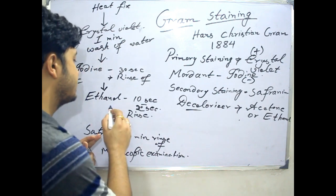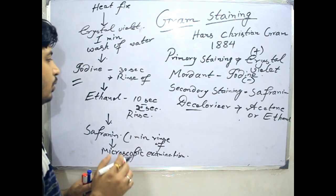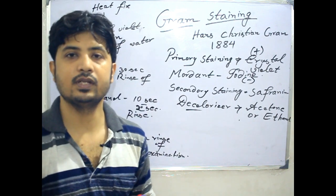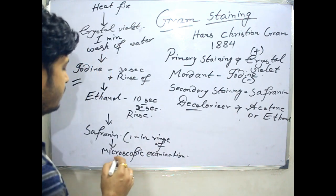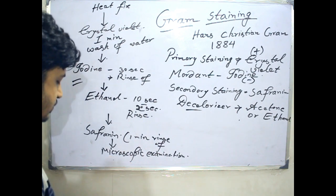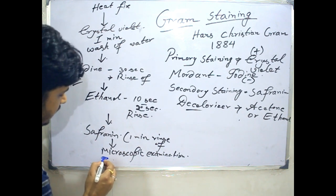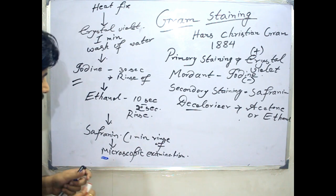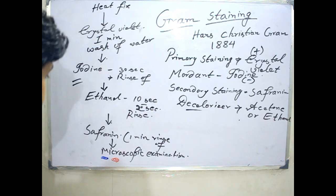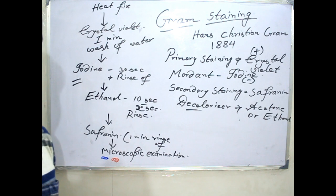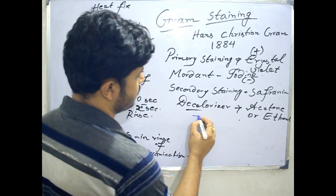So why did the gram-positive cells remain purple and why did the gram-negative cells decolorize? When you are checking under the microscope, the gram-positive cells will be purple in color, and in case of gram-negative it will be pink to red. This differential aspect is created by the cell wall composition. Now let's look at the cell wall composition of gram-positive and gram-negative cells.